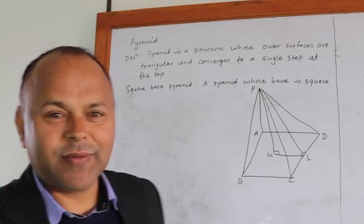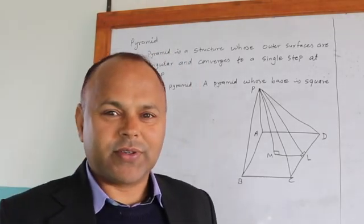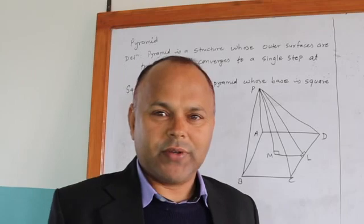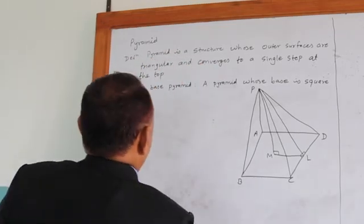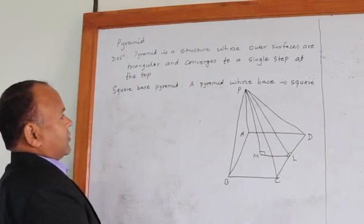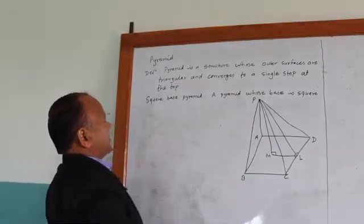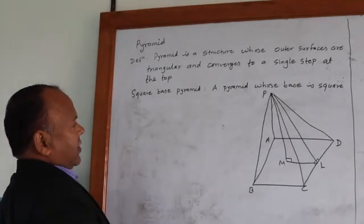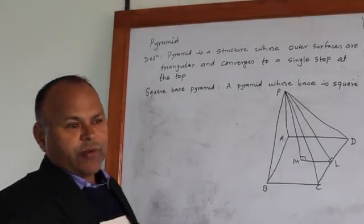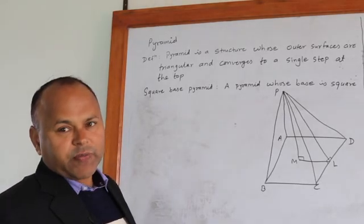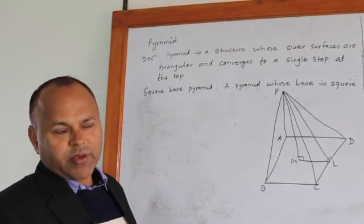Hello everyone. Today we are going to discuss about the pyramid. A pyramid is a structure whose outer surfaces are triangular and converges to a single point at the top. According to the different bases there are different types of pyramid. Today we will discuss here about the square base pyramid only.